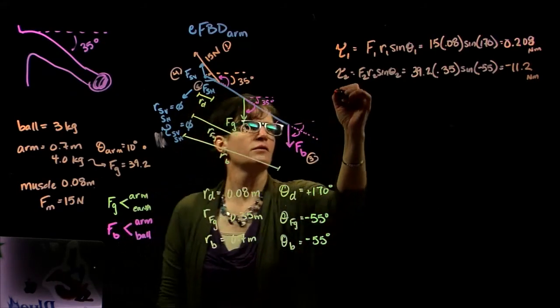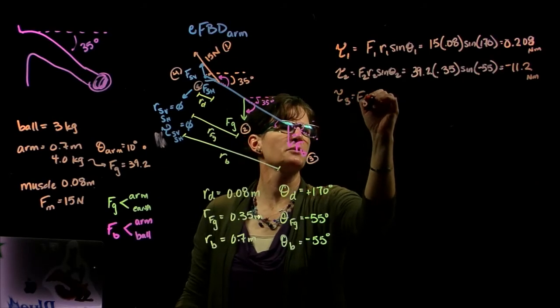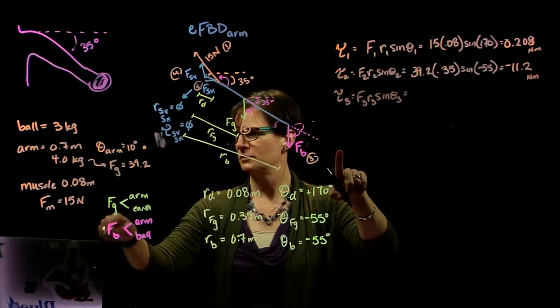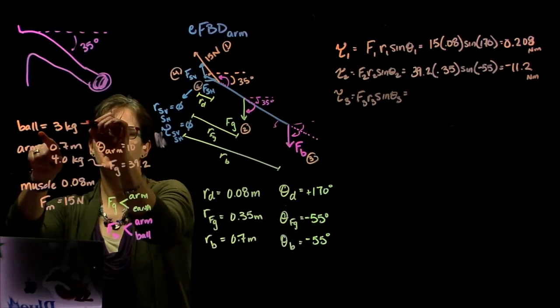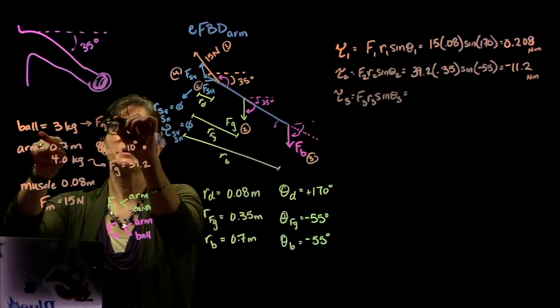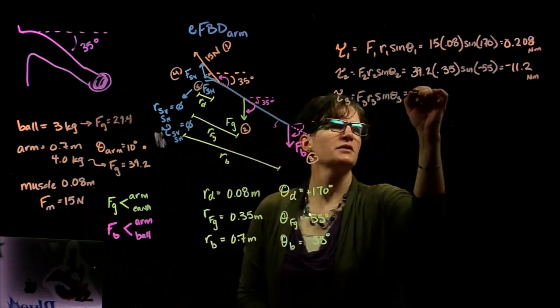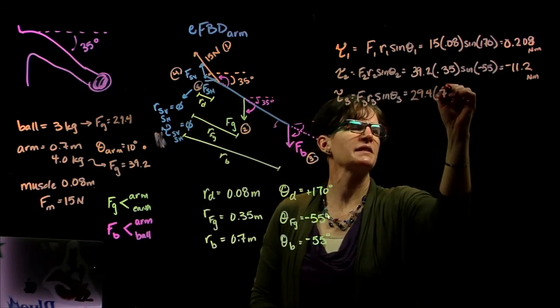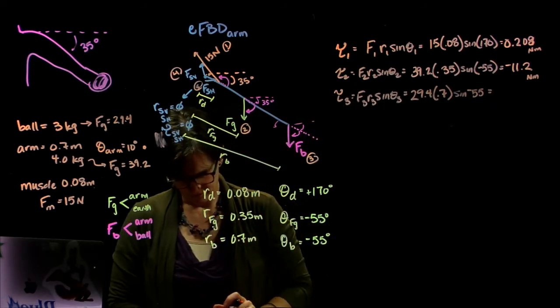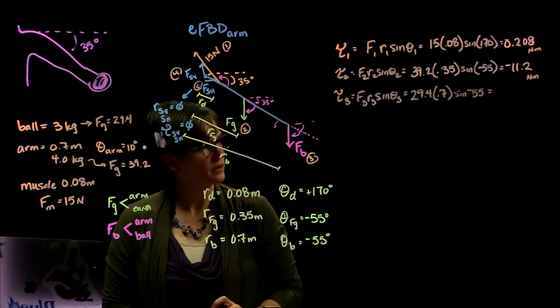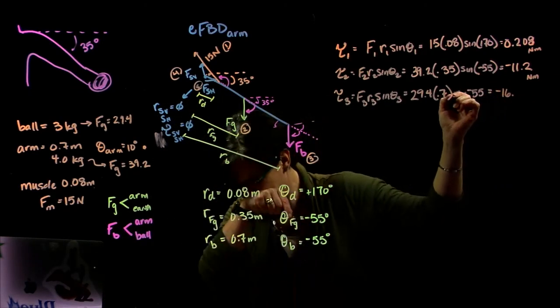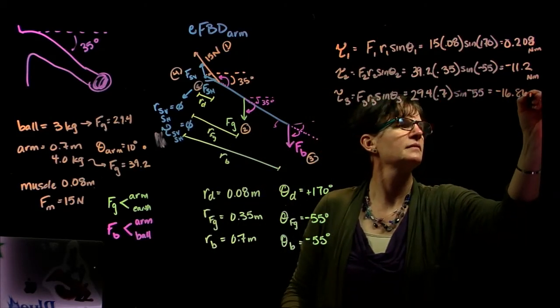Okay, force number 3, or torque 3, excuse me, is force 3, radius 3, sine of theta 3. Well, we are told that it's a 3 kilogram mass, which means that the force of gravity is 29.4 newtons. So we have 29.4 times 0.7, times the sine of negative 55, 29.4, times 0.7. And we get negative 16.86 newton meters.